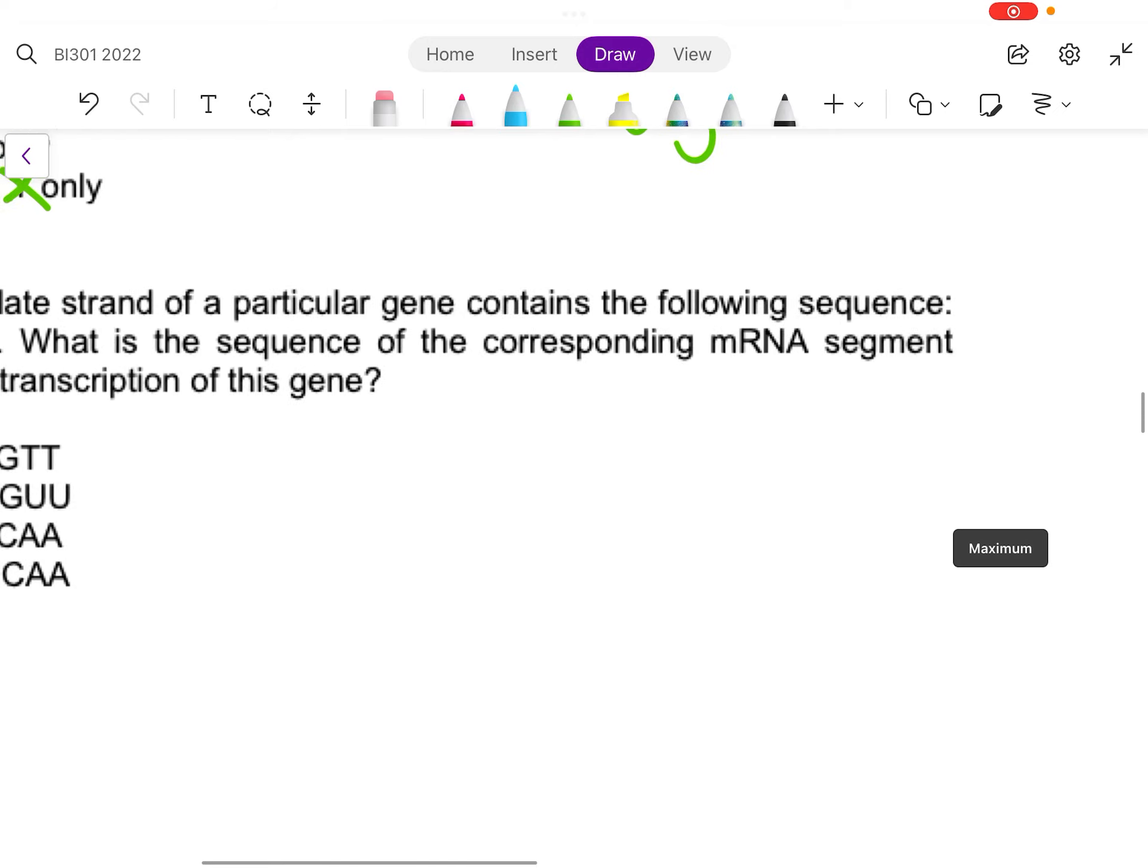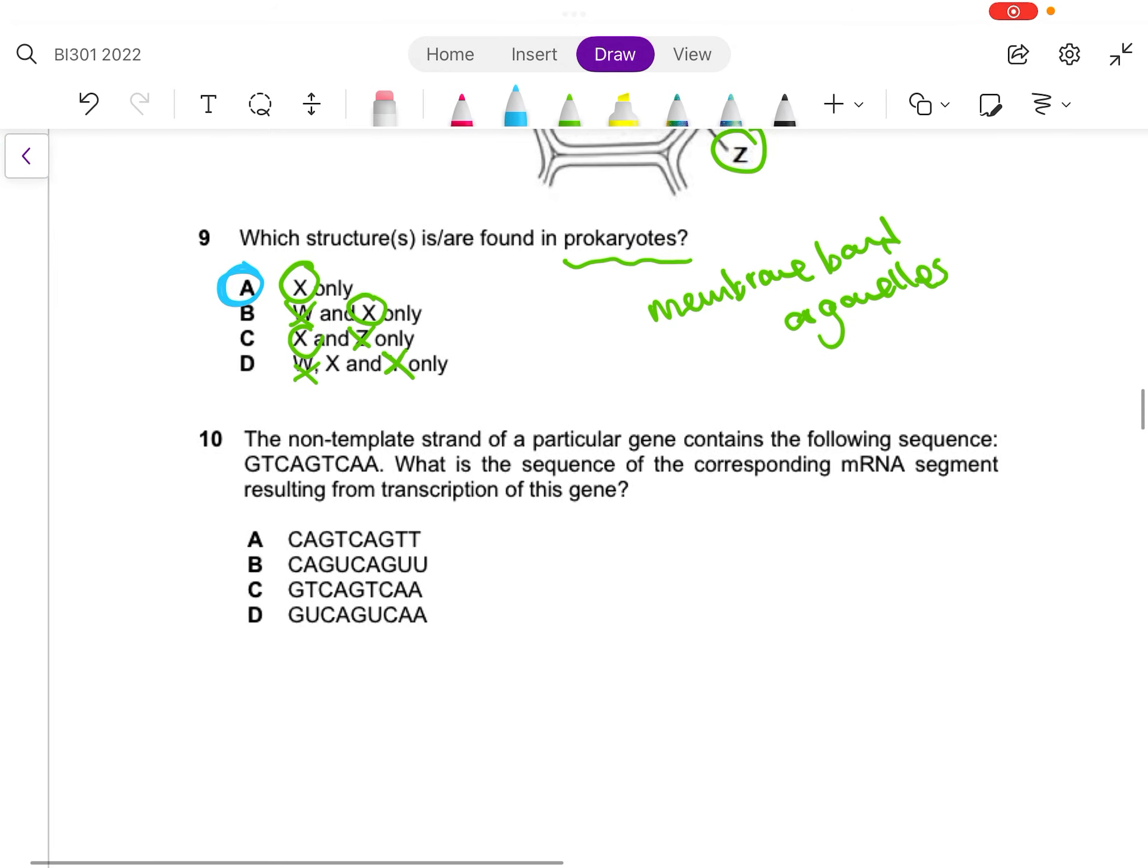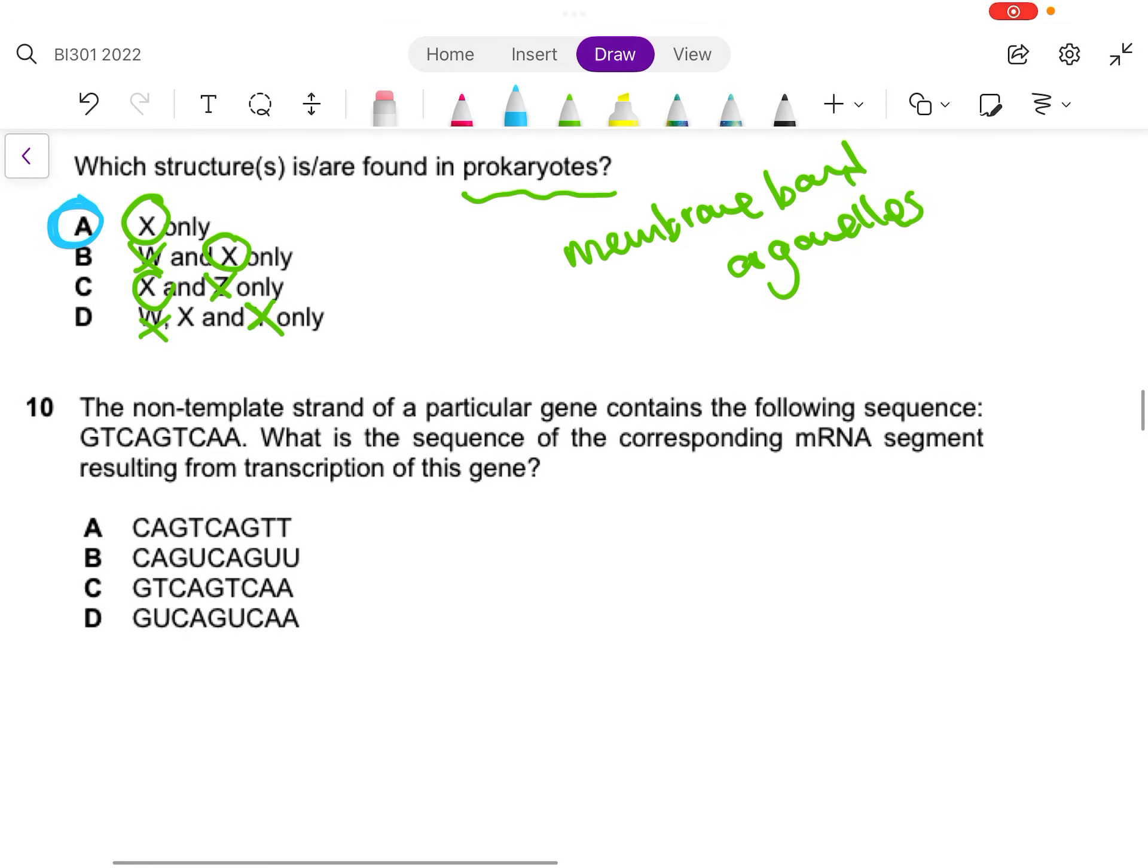Next let's go to question 10. What is the sequence of the corresponding mRNA segment resulting from the transcription of this gene? They say that this is the non-template strand. They did not provide whether this is 5 prime to 3 prime, so you can assume that this is 5 to 3. Usually if we do not provide the directionality, you can assume that it's from 5 to 3.